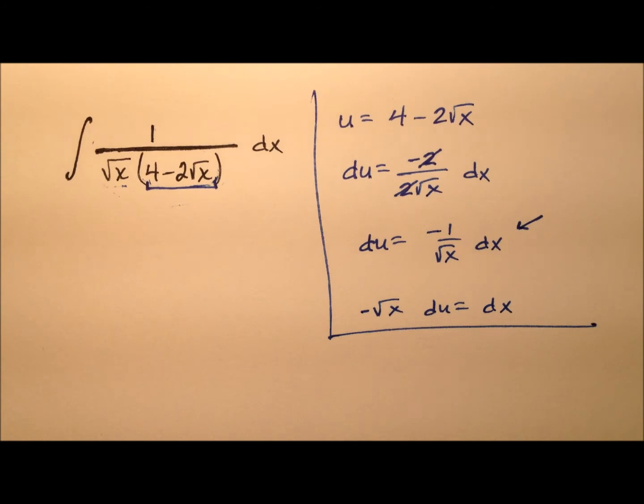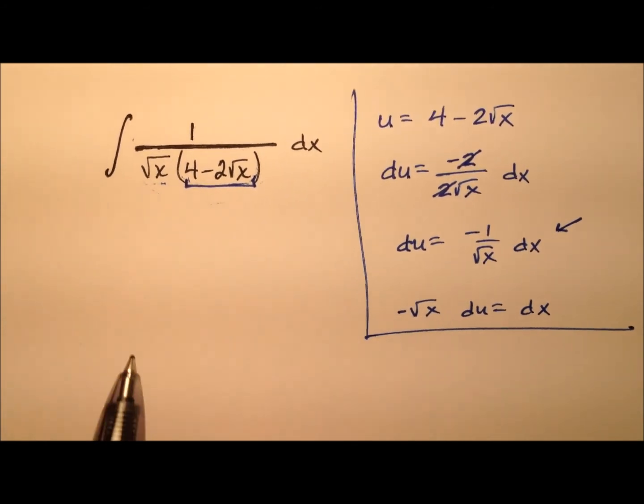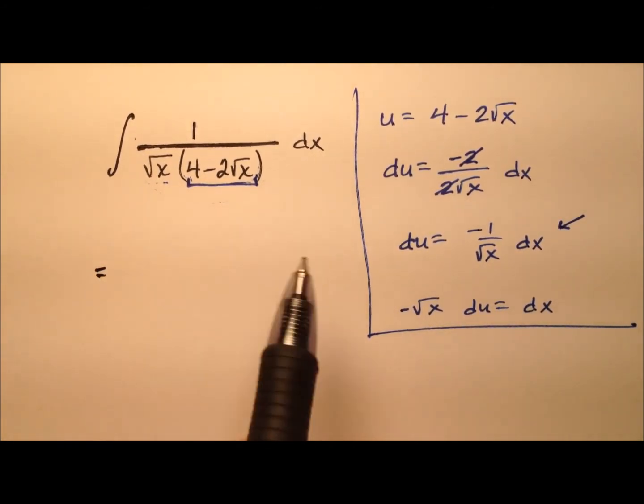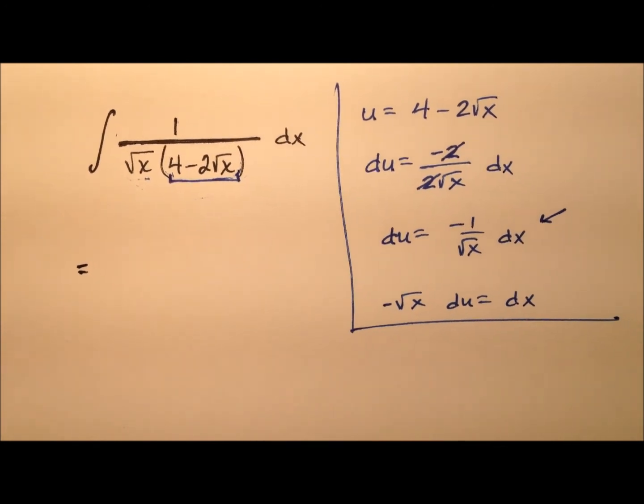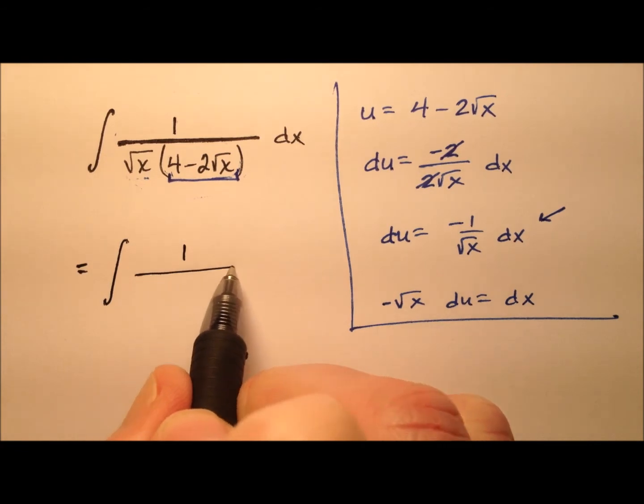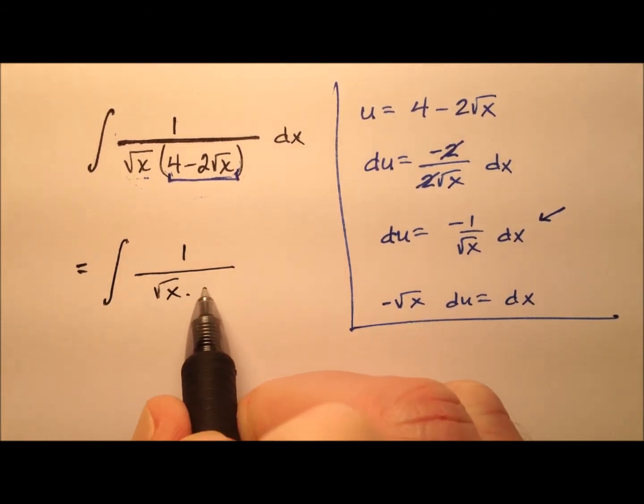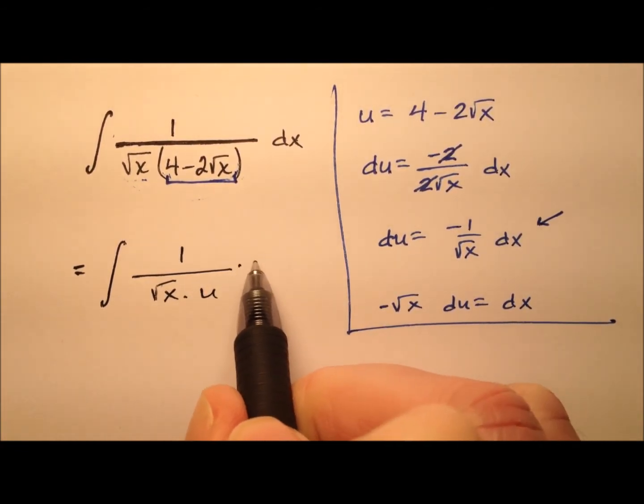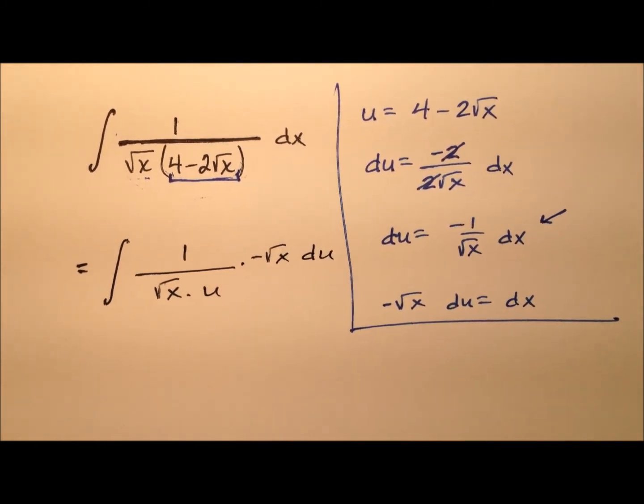So it looks like we're ready to substitute back into this integral to change it from x's to u's. We have the integral of 1 over the square root of x times u, and then that's multiplied by the opposite of the square root of x du.